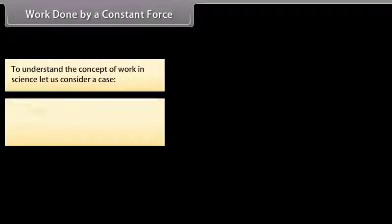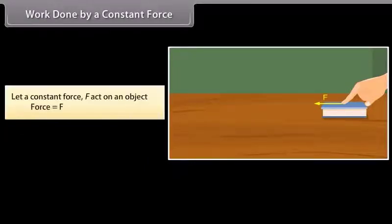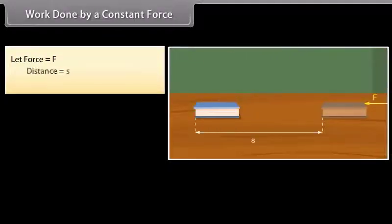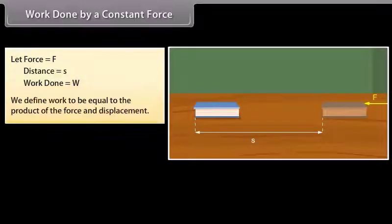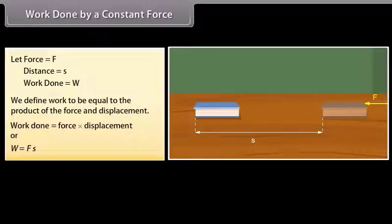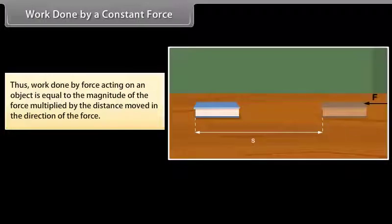To understand the concept of work in science, consider a case where the force is acting in the direction of displacement. Let a constant force F act on an object, and let the object be displaced through a distance S in the direction of the force. Let W be the work done. We define work to be equal to the product of force and displacement: W = F × S. Work done by a force on an object equals the magnitude of the force multiplied by the distance moved in the direction of the force.